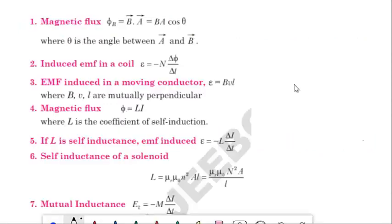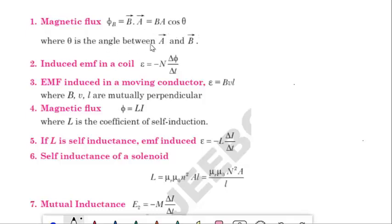Hello dear students, welcome back to Learn Physics. In today's video we are going to discuss some important formulas from electromagnetic induction. The first one is magnetic flux — how can we find out magnetic flux? It is B dot A, which we can represent as BA cos θ, where θ is the angle between A and B.